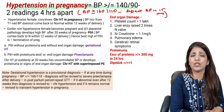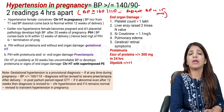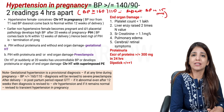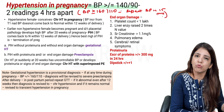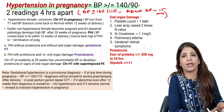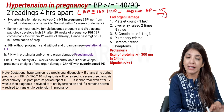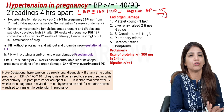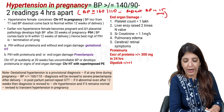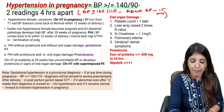Similarly for severe hypertension: if BP is more than or equal to 160 systolic, or diastolic more than or equal to 110, either of them, then you are going to call it severe hypertension.